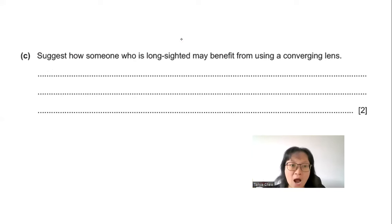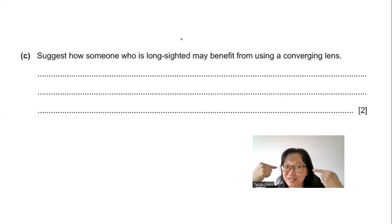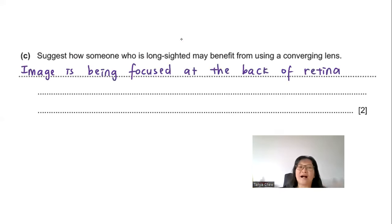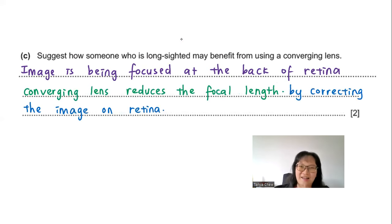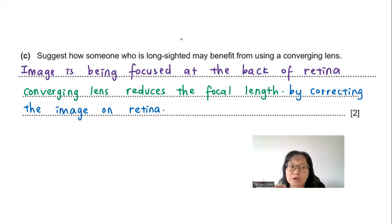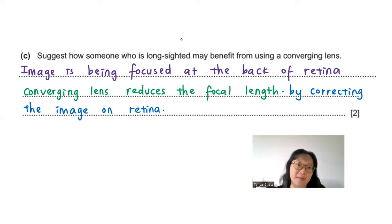Part C: Suggest how someone who is long-sighted may benefit from using a converging lens. For a long-sighted person, the image is focused behind the retina. A converging lens helps by reducing the focal length, correcting the focus so that the image falls exactly on the retina.